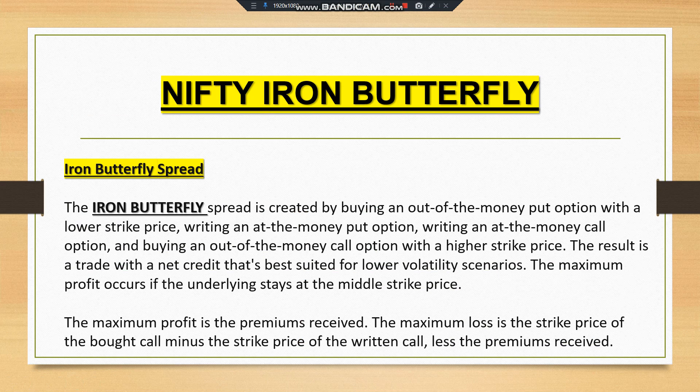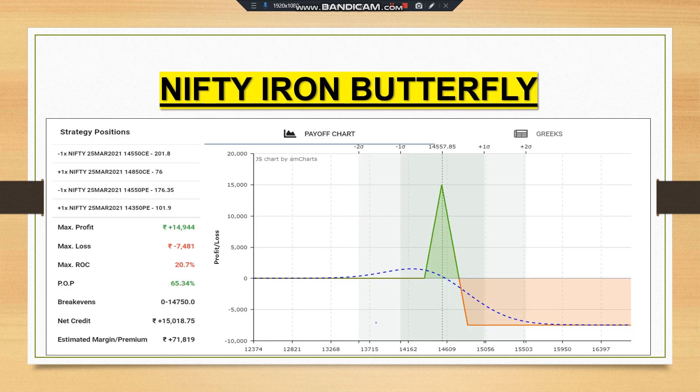The basic definition of an iron butterfly spread: it is created by buying an out-of-the-money put option with a lower strike price, writing (short selling) an at-the-money put option, writing an at-the-money call option, and buying an out-of-the-money call option with a higher strike price. This results in a net credit trade, best suited for a lower volatility scenario. Maximum profit occurs if the underlying stays at the middle strike price; maximum loss is the strike of the bought calls minus the strike of the written calls less the premium received.